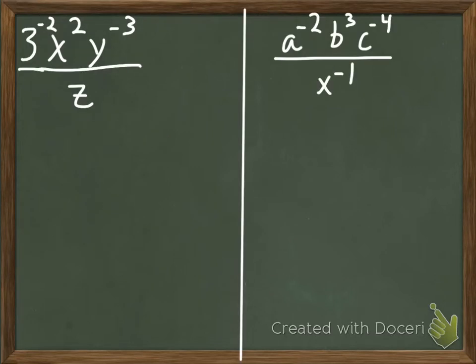Okay, so here's two examples. Now, whenever you're doing this, you only have to move the things that have negative exponents. So if it doesn't have a negative exponent, you don't have to worry about it. So let's look on the left here.